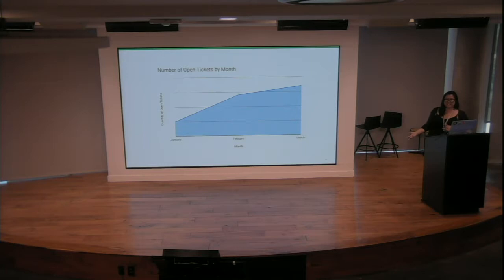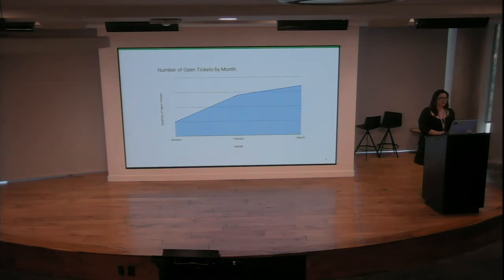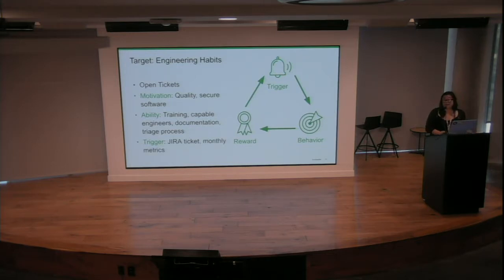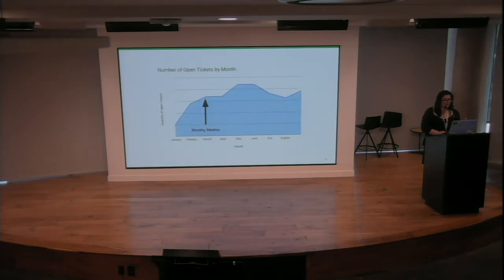I took it a bit personally because we're in the trenches together — we've gone through releases, outages, incidents, hot fixes, and rollbacks. We agreed this was important work, so what were we doing wrong? Going back to the drawing board, I thought maybe every team handles JIRA tickets differently and they just weren't seeing them. So I decided to introduce monthly metrics to the engineering leadership team, thereby modifying the trigger. The results were not quite what I wanted — it stabilized but wasn't improving.